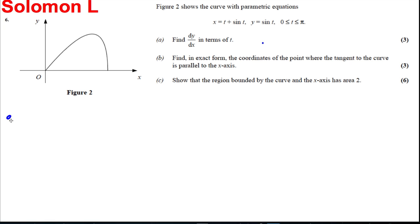Part A, find dy by dx. We use the formula dy by dx. The chain rule is dy by dt divided by dx by dt. And let's work at each of these. If y is equal to sine t, then dy by dt must be equal to cos t. And if x is equal to t plus sine t,